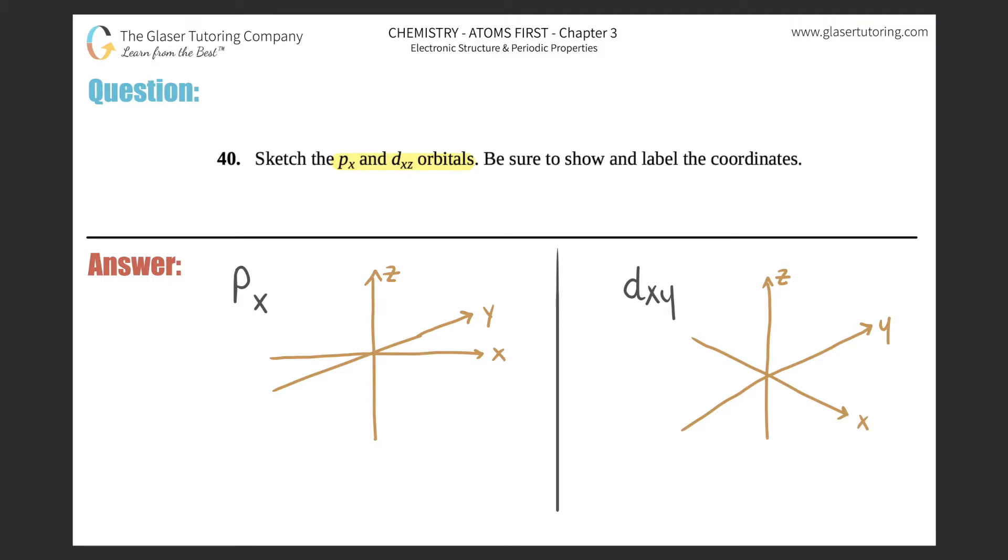Now for both of them, just know that the center is always the nucleus. When we draw the orbitals, we talk about electrons, so the electrons are always outside the nucleus. That's why you'll always draw these drawings with the orbitals coming off of that center. For the p, it's telling us that we need to draw it in the x direction.